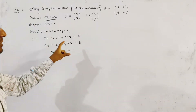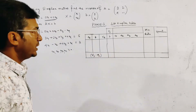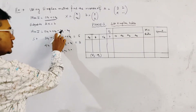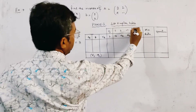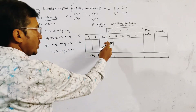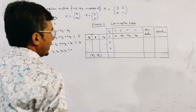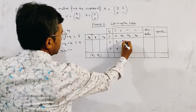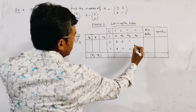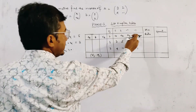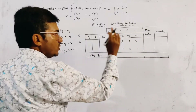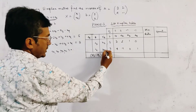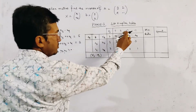Now we make the first simplex table of phase 1. We fill the table one by one. We first create the row of cj, given by 0, 0, -1, -1. Then we fill the column B as 5, 3. We fill all the columns A1, A2, A3, A4: column A1 is (3, 4), column A2 is (2, -1), column A3 is (1, 0), and A4 is (0, 1). Clearly A3 and A4 are in the basis as standard basis vectors. So we write A3, A4 with corresponding variables X3, X4 and cost vector CB = -1, -1.